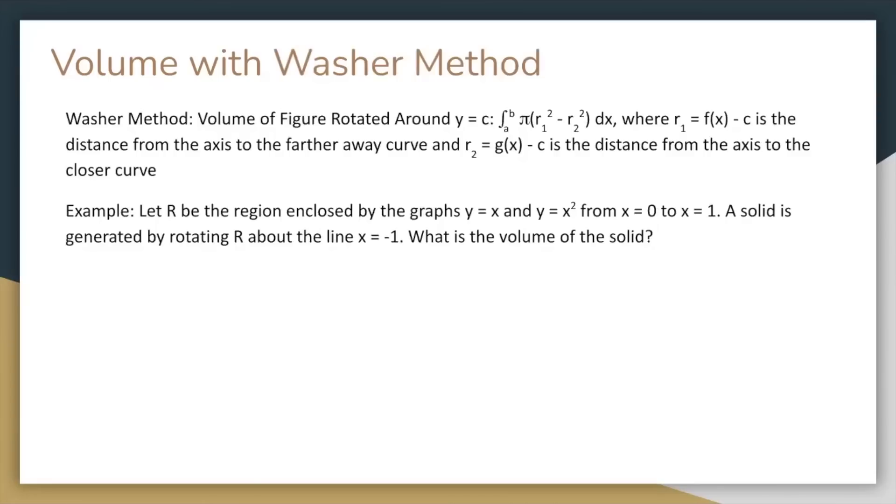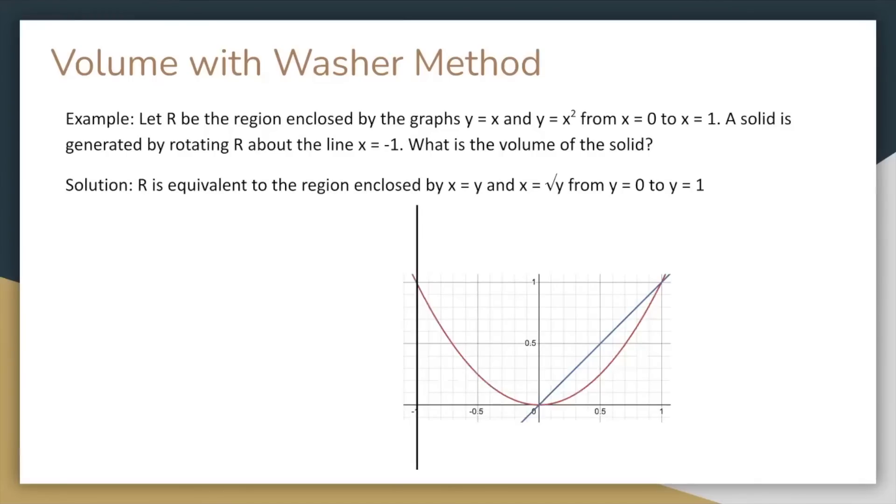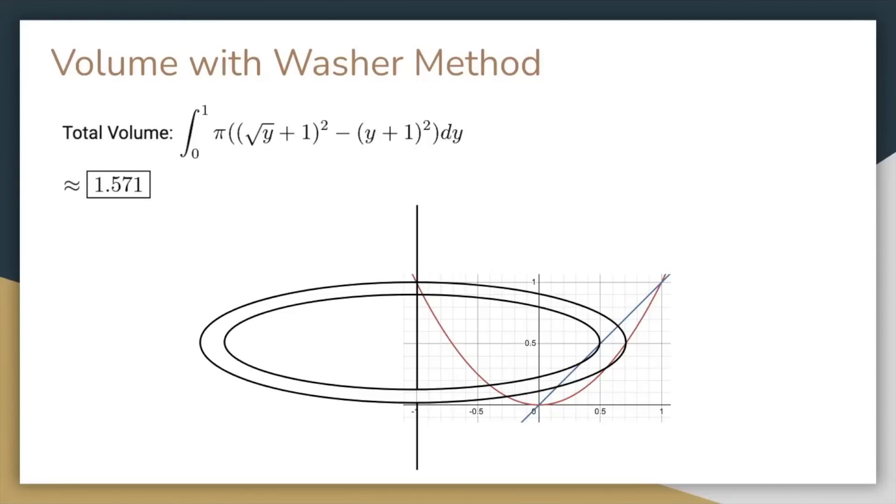Here's an example of the washer method. Let r be the region enclosed by the graphs y equals x and y equals x squared from x equals 0 to x equals 1. A solid is generated by rotating r about the line x equals negative 1. What is the volume of the solid? Alright, since we're dealing with x equals negative 1 as our axis of rotation, we have to change our curves to be a function of x in terms of y and the bounds to be y values. So here are the graphs and the axis of rotation. At any particular y value, we are rotating the graphs around our axis of rotation to get a circle with the hole in it. As you can see from the graphs, the distances from the axis to the graphs are the square root of y plus 1 and y plus 1 respectively, so by plugging those into the formula for the volume, we get this integral. Later I'll show you how to evaluate this definite integral with your calculator. It's approximately 1.571.